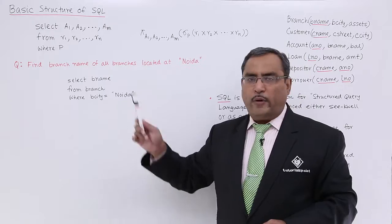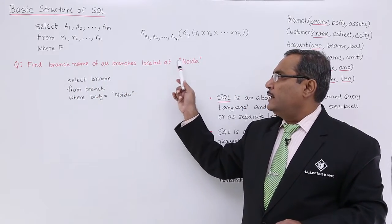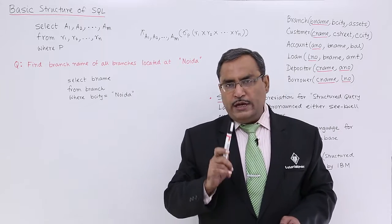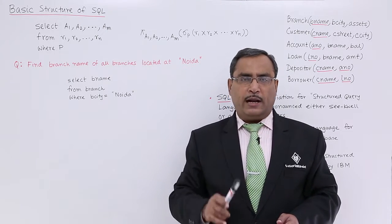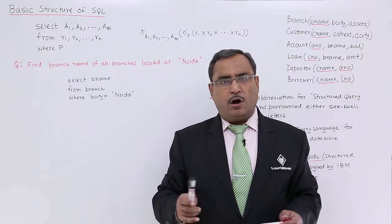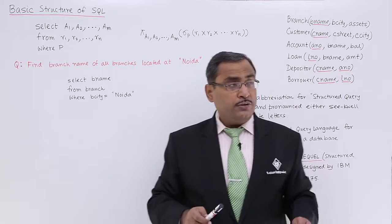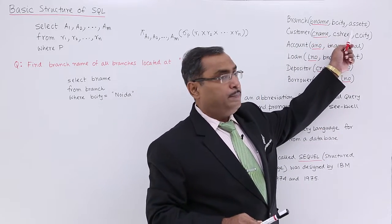Let us consider one query: Find the branch name of all branches located at Noida. We require to find out all branches which will be located at the branch city Noida from the branch relation or from the branch table. Here you see we are having this Branch: here branch_name, branch_city, branch_assets.